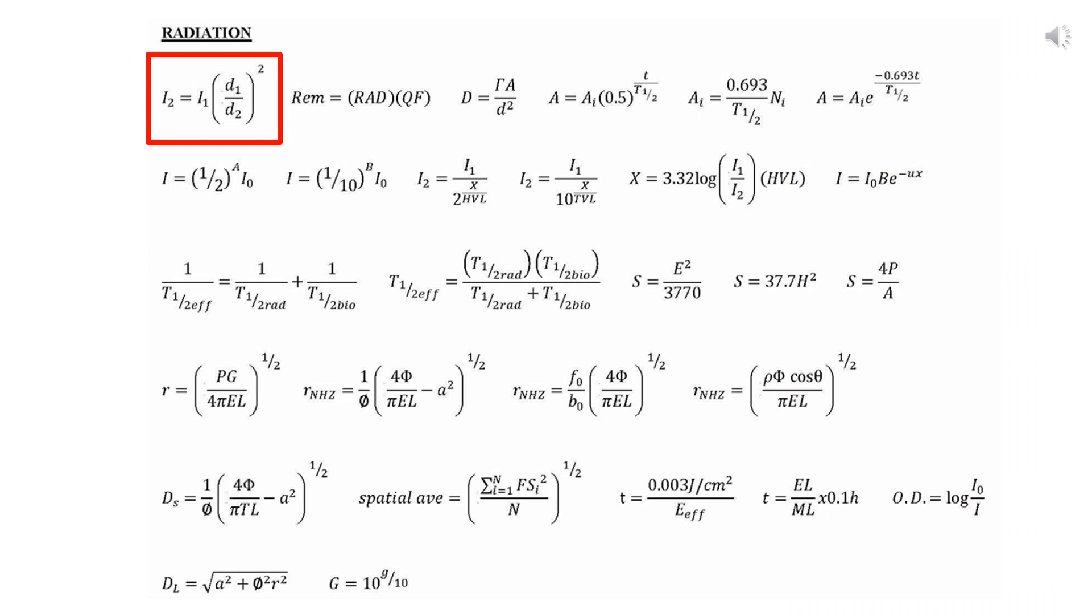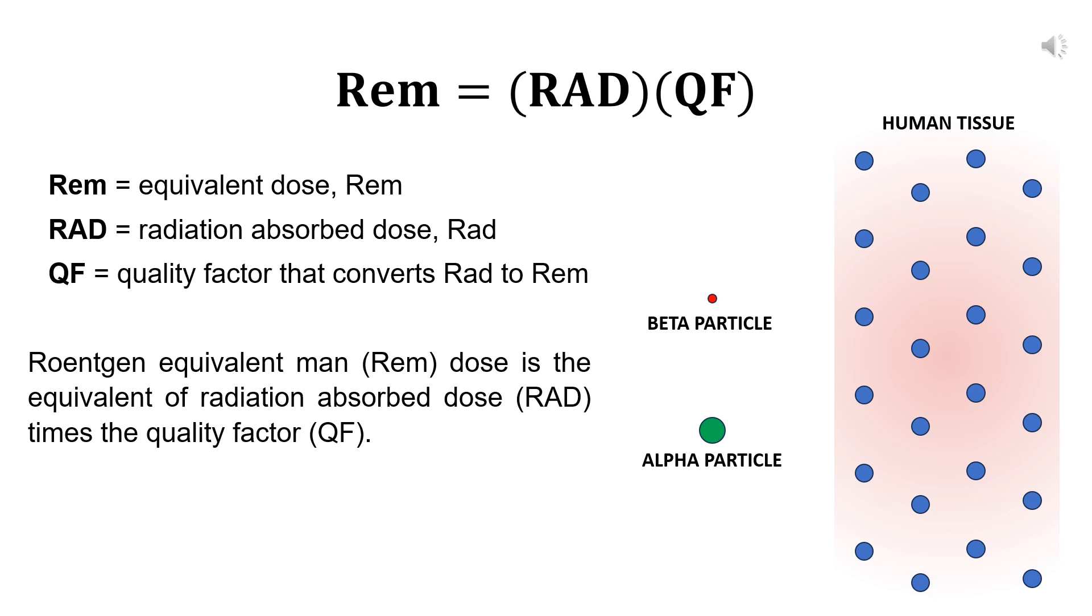Now let's go to the second equation. This equation is about Roentgen equivalent man dose, or REM, which is the equivalent of radiation absorbed dose times the quality factor. REM is a unit used to measure the biological effects of ionizing radiation on human tissue. REM quantifies the potential harm of radiation by taking into account the amount of radiation absorbed by the body and the type of radiation.